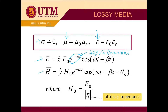For the magnetic field H, the direction is y, and the magnitude is H_naught. The expression is H_naught times exponent negative alpha z, times cosine of (omega t minus beta z minus theta_n). The term exponent minus alpha z is also the lossy component. Theta_n is basically the phase difference between the electric field and the magnetic field. The magnitude of H_naught equals E_naught divided by the intrinsic impedance N.